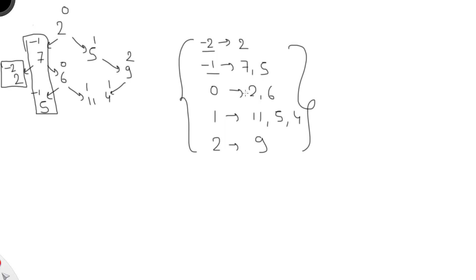We iterate starting from the root node with height 0. For each element, we check whether this key already exists in the map. At the start, the map is empty, so for key 0 there is no value. If no value exists for this key, we initialize a list and put the value there. For key 0, we create a list and insert node value 2.